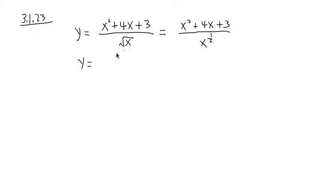So I'm going to split the fraction as this: x squared over x to the 1 half plus 4x over x to the 1 half. Let me write this down. 4x over x to the 1 half. Then I have 3 over x to the 1 half.